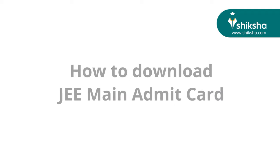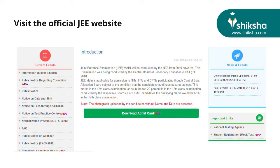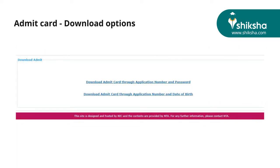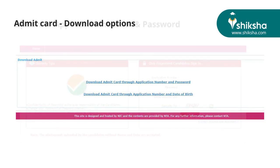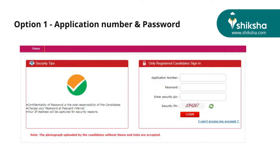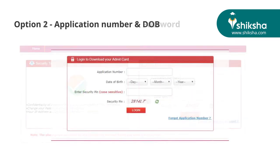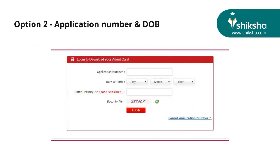Visit the official JE website and click on the download admit card option on the home screen. There are two options to download the admit card: the first one is through application number and password, and the second option is through application number and date of birth.